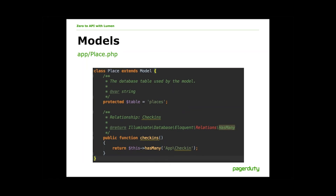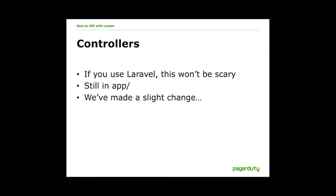We still have models, and nothing really changes here — your models are just your models. It's actually pretty easy to drag and drop certain components of your Laravel applications into a Lumen application. I actually did just that; it took me about an hour of work for a complex application, and about 20 minutes for simple things. We also still have controllers. If you use Laravel or have done any sort of MVC, it will look very familiar to you. These are still located in the app directory. But since we're making an API, we're going to do something slightly different.